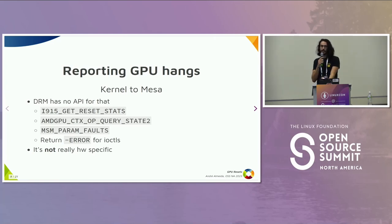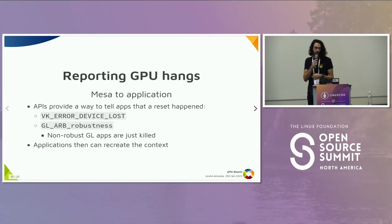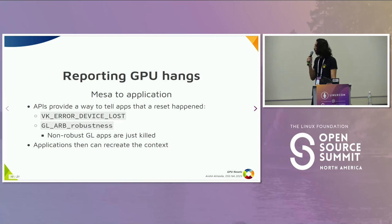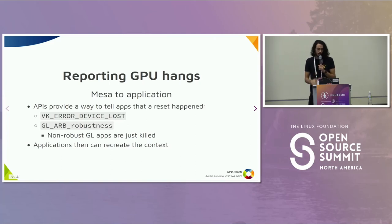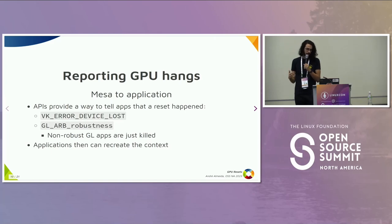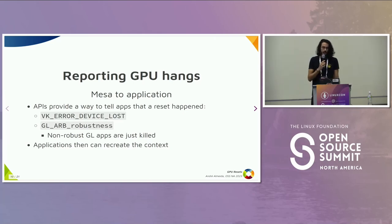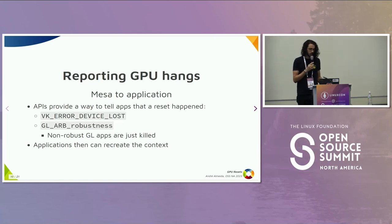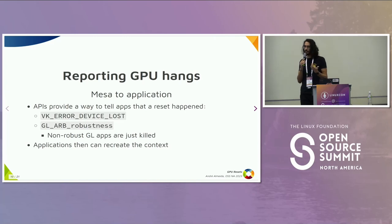So now we've told Mesa that something bad is going on, and Mesa needs to report to the application. On the graphics API, we have ways to tell that to the application. In Vulkan, we have the device lost error, and this device loss error is kind of generic — it's not just about GPU resets. It can be about hot-plugging, for instance. If an application gets a device loss error, it should assume there's no device to rely on, so it needs to recreate all the context. For OpenGL, we have the robustness extension. On the Mesa side, if Mesa sees that the app hasn't implemented robustness, it needs to just kill the app on reset, because it can't check if the GPU was lost or not.